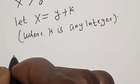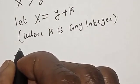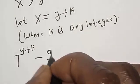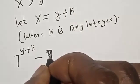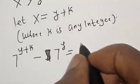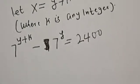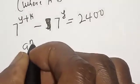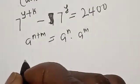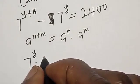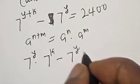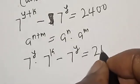Now, 7 raised to the power y plus k, minus 7 raised to the power y, is equal to 2400. Remember that a raised to the power n plus m is equal to a raised to the power n multiplied by a raised to the power m. Then, 7 raised to the power y multiplied by 7 raised to the power k, minus 7 raised to the power y, is equal to 2400.